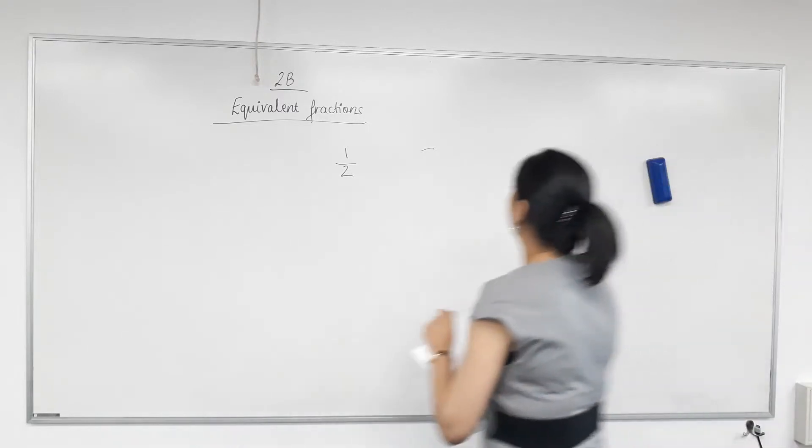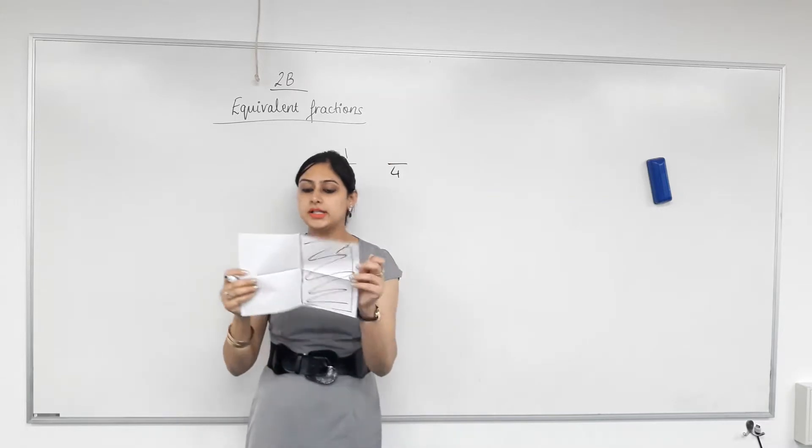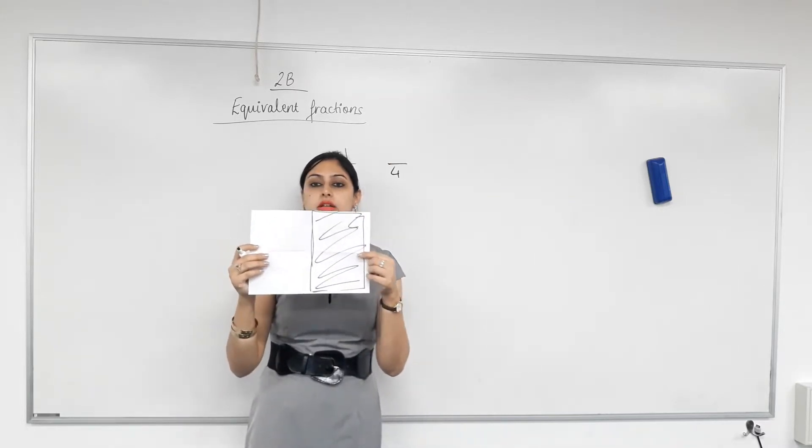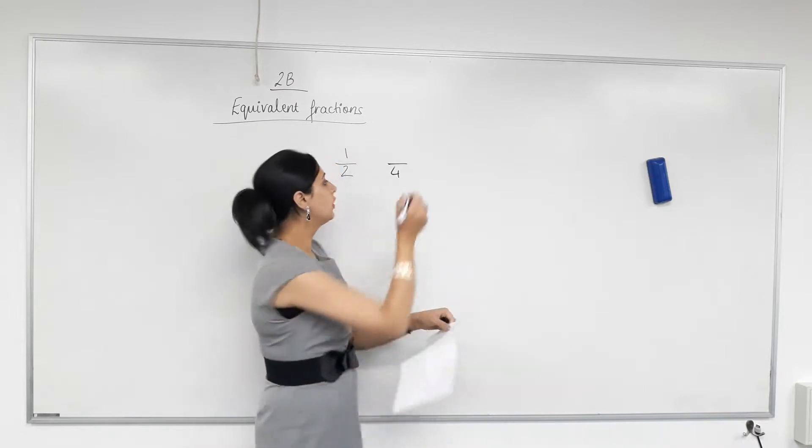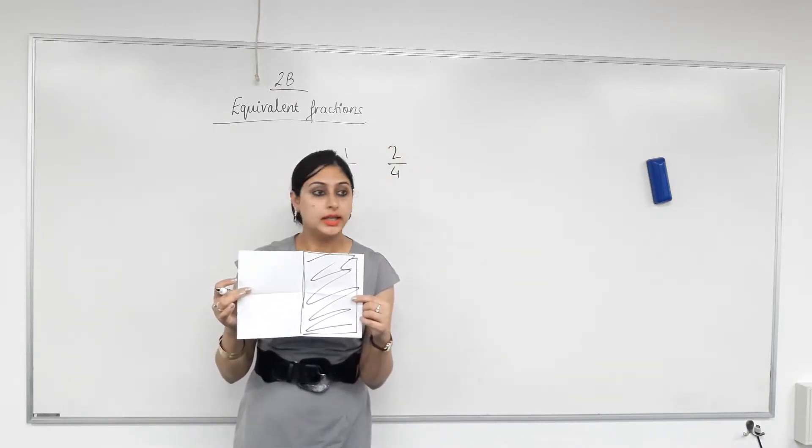So four equal parts. Out of those equal parts, how many have been shaded? Two. So that means now we can represent this as two fourths. Yes?